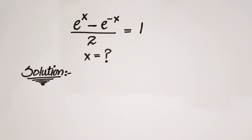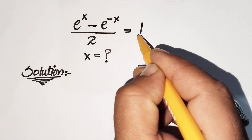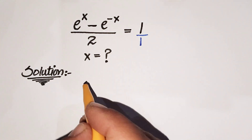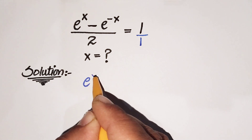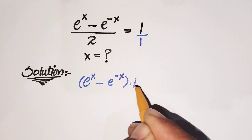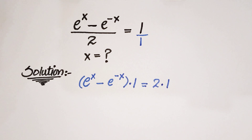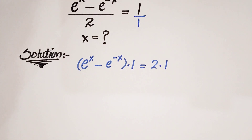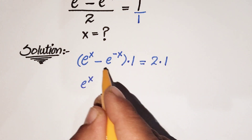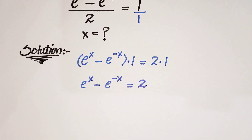Now we are going to start our solution. First of all we are going to cross multiply. By cross multiplication we put the denominator as 1, so multiplying these terms we get e raised to power x minus e raised to power minus x, which is equal to 2 times 1, which is 2.